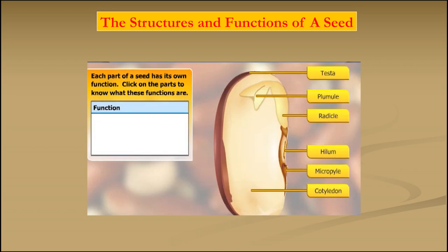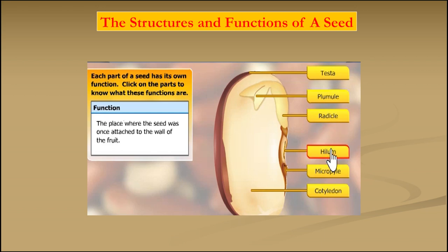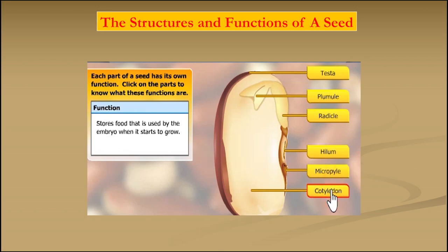Each part of a seed has its own function. The testa, with its thick outer coat, protects the seed. The plumule grows to form a shoot. The radicle grows to form roots when the seed germinates. The hilum is the place where the seed was once attached to the wall of the fruit. The micropyle allows air and water to enter the seed when the seed is ready to germinate. The cotyledons and endosperm store food that is used by the embryo when it starts to grow.